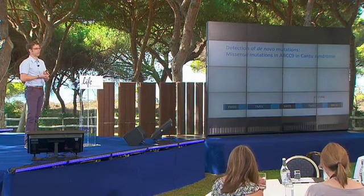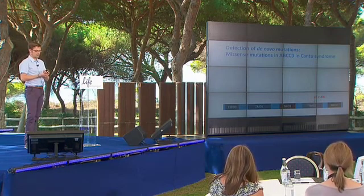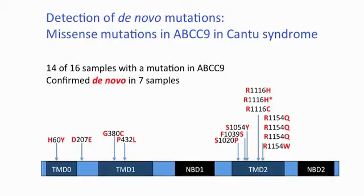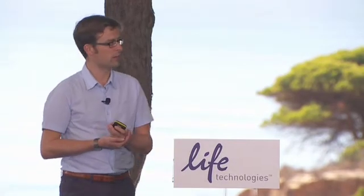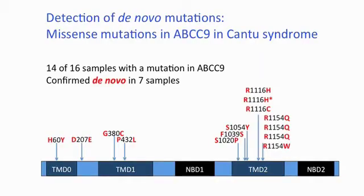The question was: is this de novo mutation specific for Cantu syndrome? We collected samples from all over the world. In the end we had DNA material from 16 Cantu patients, and from these we could confirm in 14 a missense mutation in ABCC9. For all cases where we had parental DNA, we could confirm those cases had occurred de novo — except for a single case marked with a star, where we had an affected child and an affected mother, so the disease-causing mutation was transmitted.